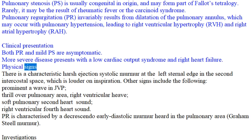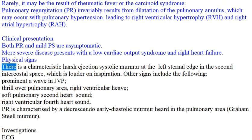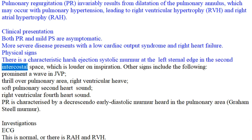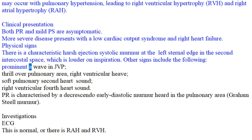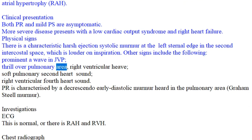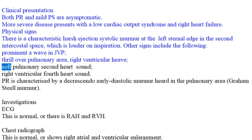Physical signs: there is a characteristic harsh ejection systolic murmur at the left sternal edge in the second intercostal space, which is louder on inspiration. Other signs include a prominent 'a' wave in the JVP, a thrill over the pulmonary area, right ventricular heave, and a soft pulmonary second heart sound.